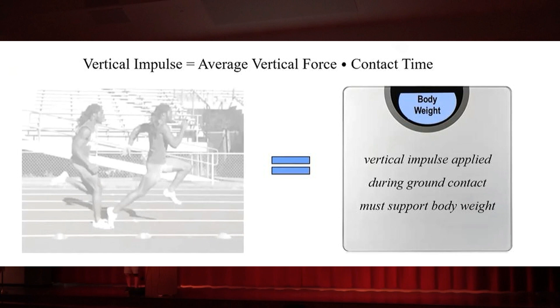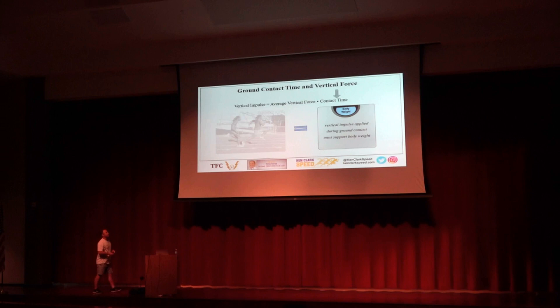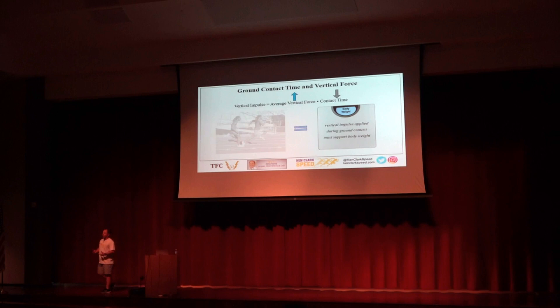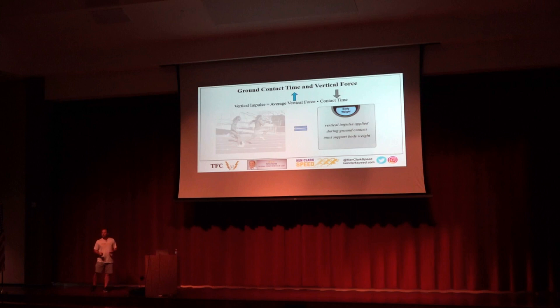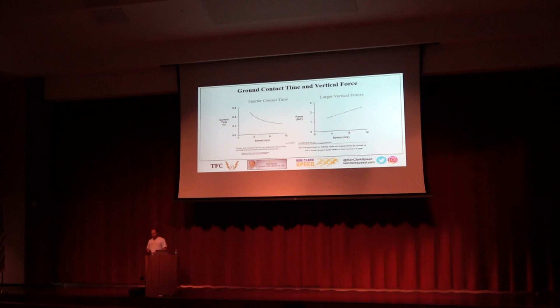As you run faster, the contact times get shorter and shorter — briefer and briefer. You have less time to apply force. That means as contact times get shorter, the force has to get bigger and bigger. The amount of vertical force you apply with every step gets bigger. Likewise, if you take two athletes with everything else equal, the faster one applies more vertical force than the slower one. So: shorter contact time, more vertical force, faster speed.